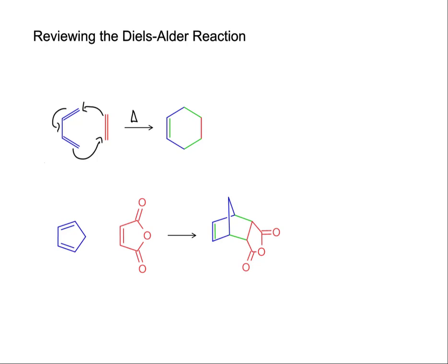You can see the Diels-Alder adduct on the right. It's a six-membered cyclohexene ring. You can see all of the original carbon atoms as well as all of the new bonds. The new bonds are drawn in green, the original carbon atoms from the conjugated system are in blue, and the original carbons from the dienophile are in red.